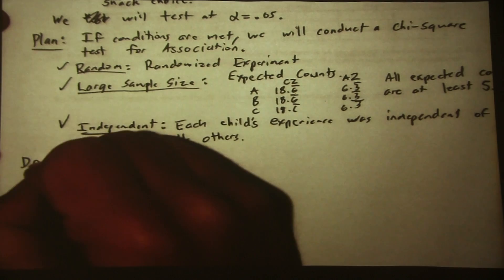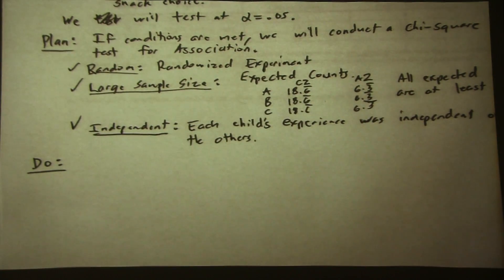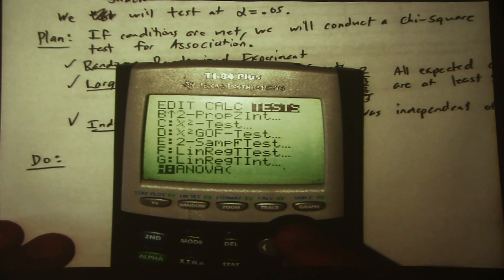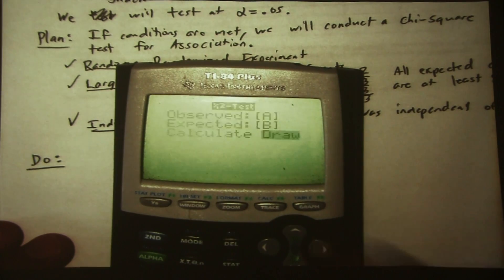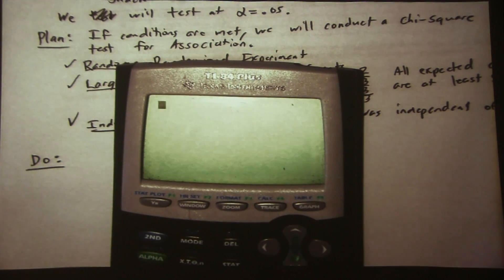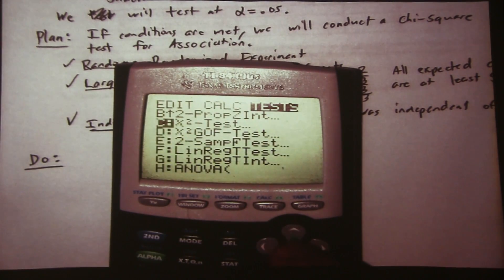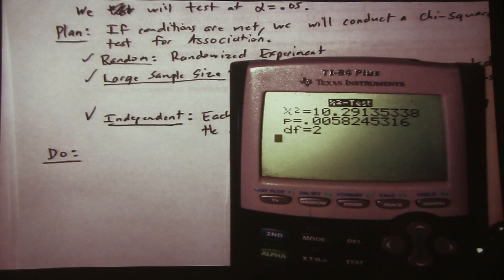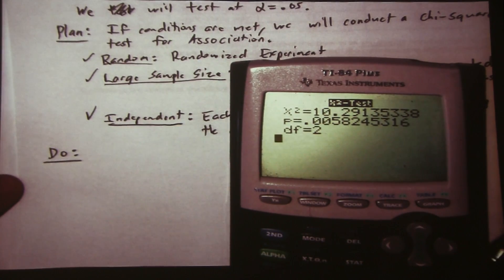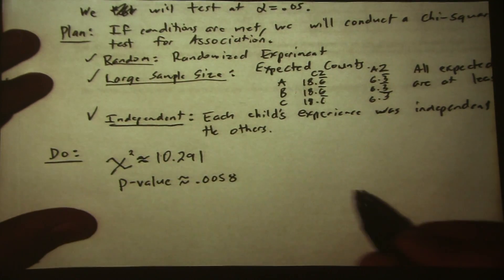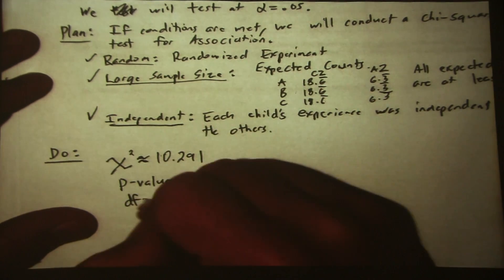Our conditions are met. Next is our do step. Let's rerun the test to get our data — we'll do calculate. Our chi-square test statistic is about 10.291, our p-value is 0.0058, and our degrees of freedom is equal to 2.